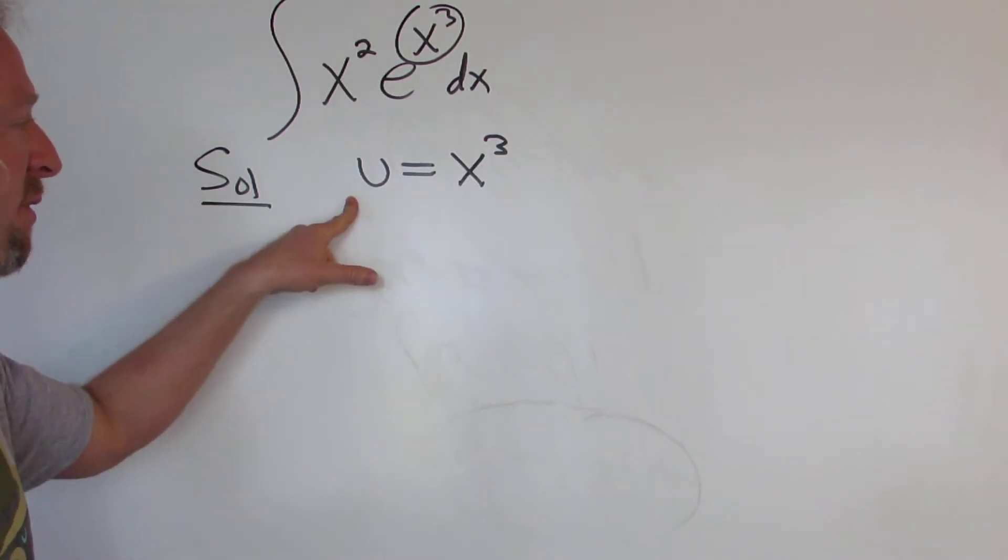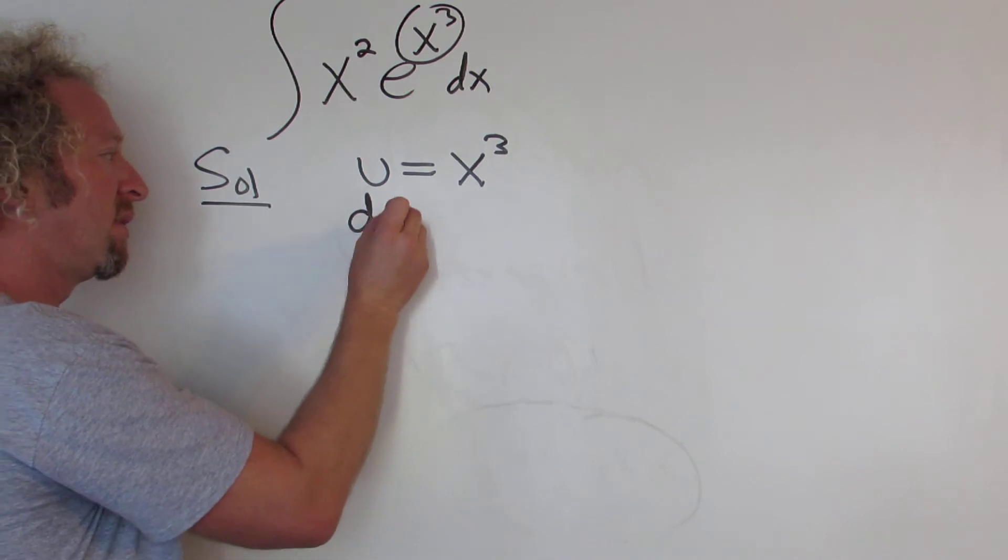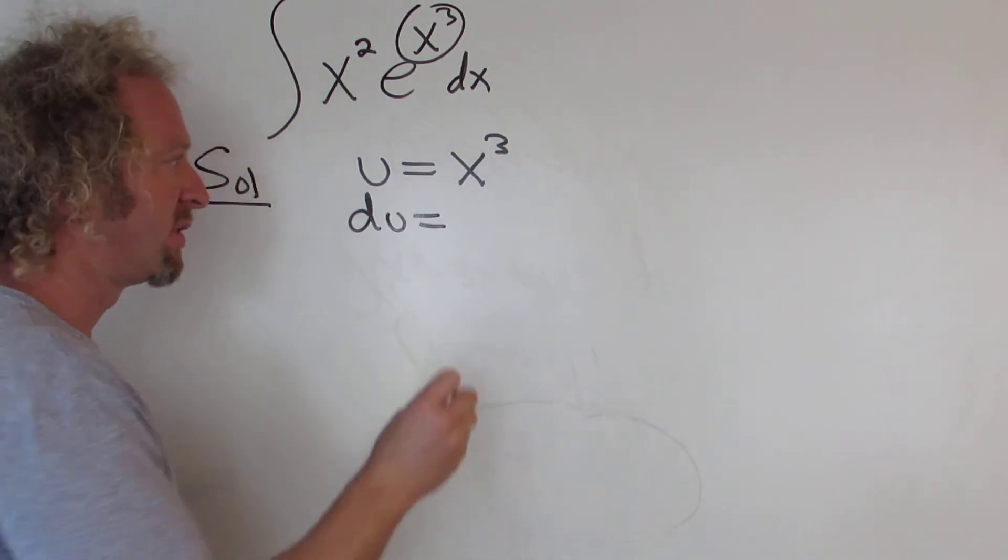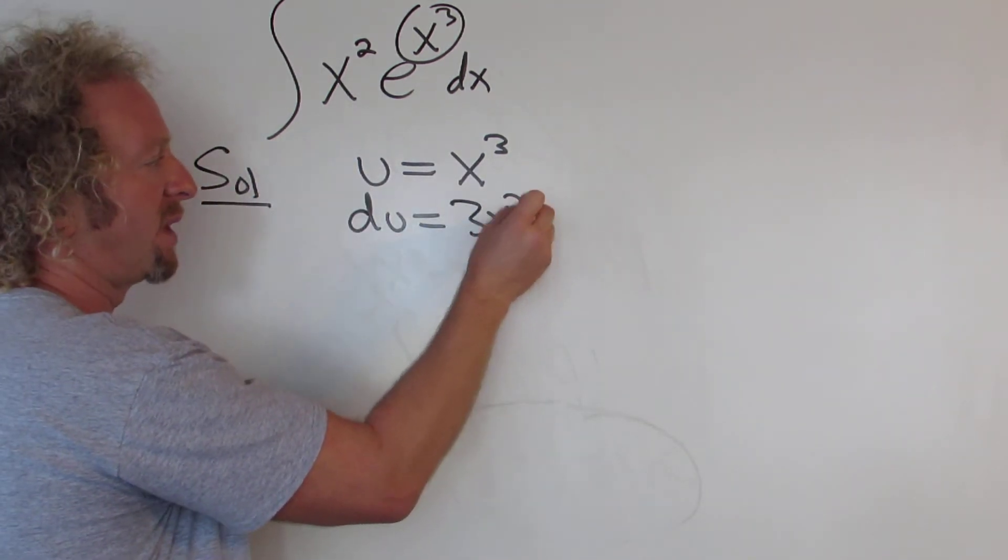And then taking the derivative of both sides, we get du. The derivative of x cubed is 3x squared dx.